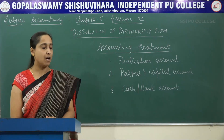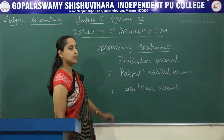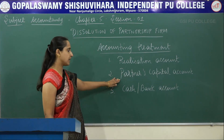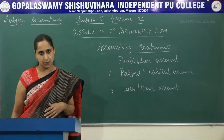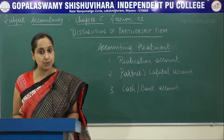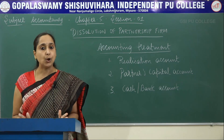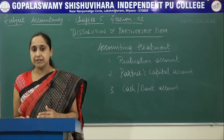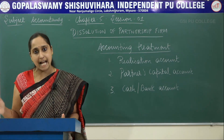Next topic is Accounting Treatment. In dissolution of the firm, we prepare three accounts: first, Realization Account; second, Partners Capital Account; and third, Cash or Bank Account. Now let's see what is Realization Account. Realization Account is prepared at the time of dissolution of the firm to know whether the firm has incurred profit or loss after realizing the assets and after paying all the liabilities.